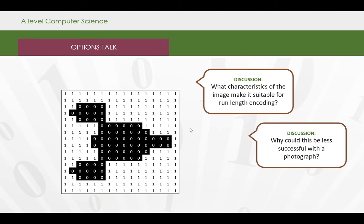This image lends itself really well to run length encoding. If we look at the data that we are actually storing, we've only got long runs of ones, we've got long runs of zeros.